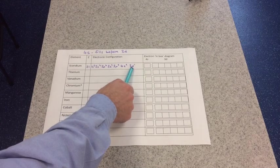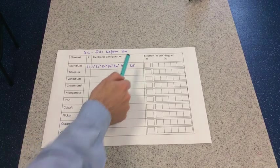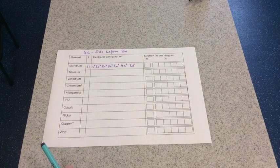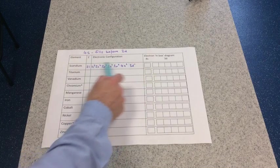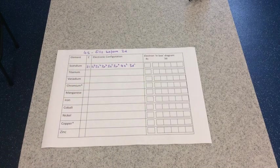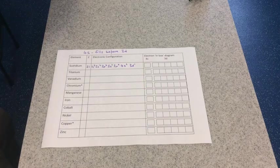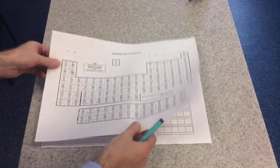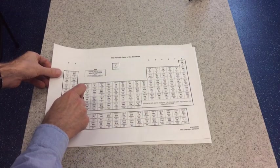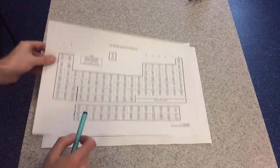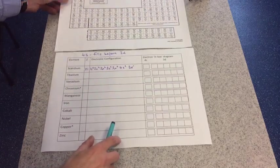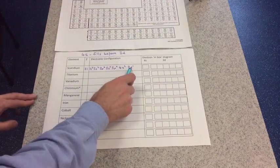And then that leaves one electron, which is going to go into the 3d subshell. So it belongs to the d-block, scandium, because this is the d-block. Its highest energy electron is in a d subshell.